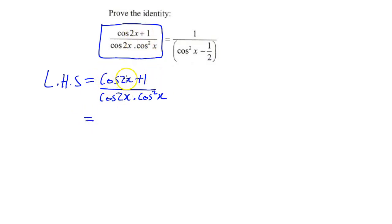The expansion that I'm going to choose is 2 cos squared x minus 1, because I want to cancel off this constant.